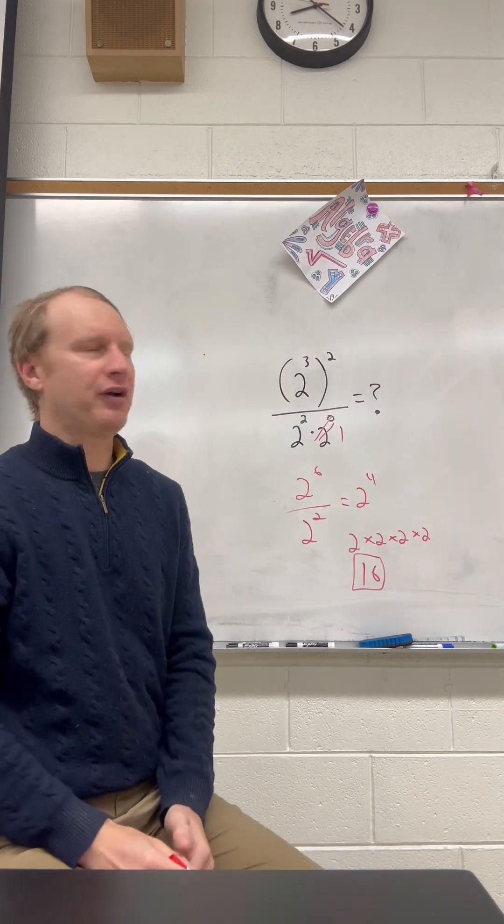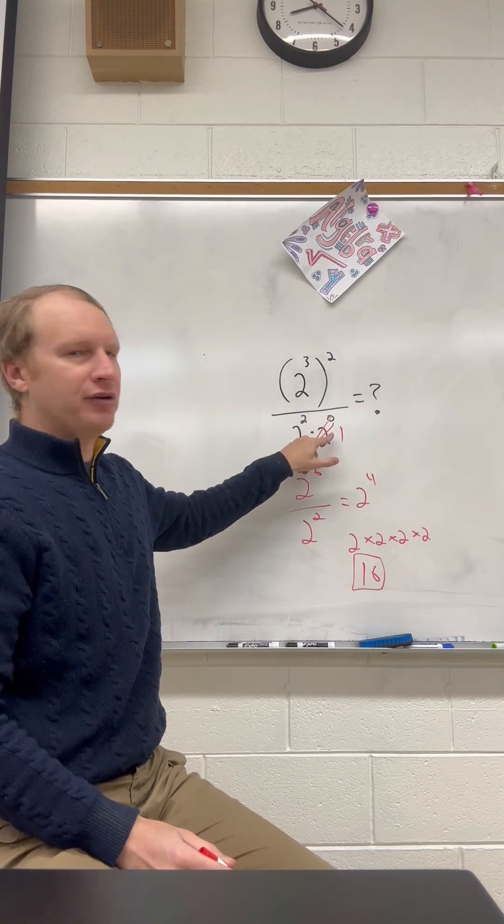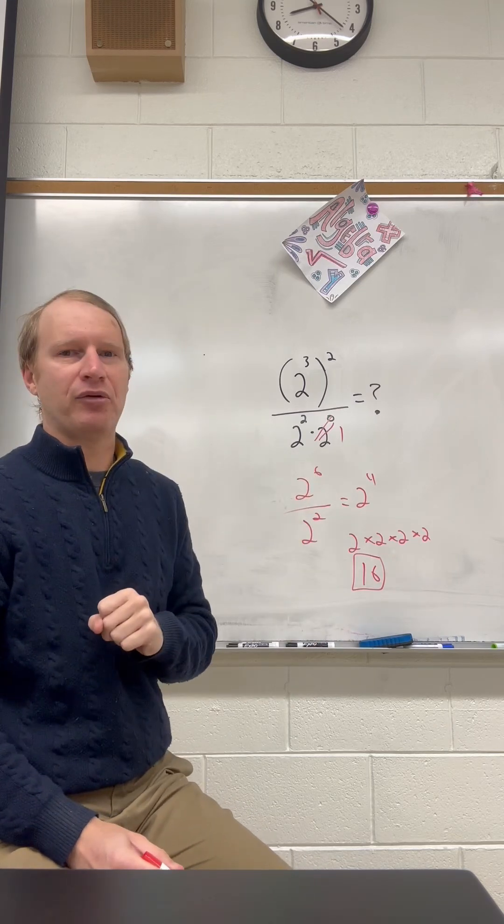So remember the properties of exponents. When we have a power to a power, we multiply the exponents. Anything to the 0 power is 1. And when we're dividing exponential expressions, we simply subtract the exponents.